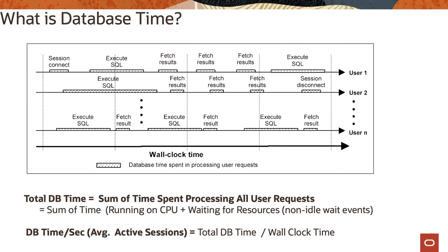Let's take an example to understand what database time is. There are several user sessions connected to Oracle database performing various activities. The database spends time on various requests — these could be session connect, executing SQL, or fetching results. There are also session disconnect activities going on within the database. At any point in time, there could be one or more sessions. Here you see User 1, User 2, and User N — three user sessions connected doing some activity. The black line shows total wall clock time, and the database time is represented in the dotted areas.